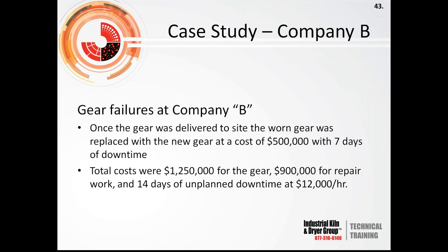Once the new gear was delivered and the worn gear was replaced, there was another cost of $500,000 and another 7 days of unplanned downtime. The total costs added up to $1,250,000 for the gear, $900,000 for the repair work, and 14 days of unplanned downtime at $12,000 per hour. If inspection programs had been in place, the lubrication concern could have been addressed and all these costs could have been avoided.